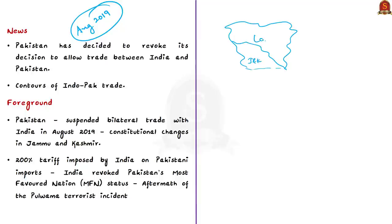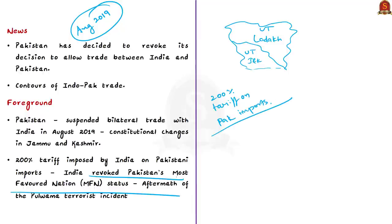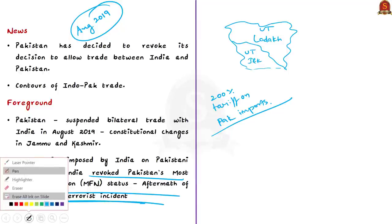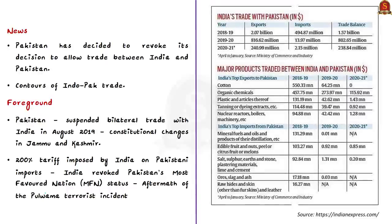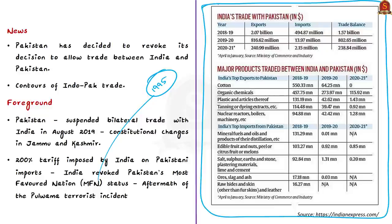Many experts believed the underlying reason for Pakistan's suspension of trade in August 2019 was the 200 percent tariff India imposed on Pakistani imports after revoking Pakistan's Most Favored Nation (MFN) status — done in response to alleged state-sponsored involvement in the Pulwama terrorist attack. It is notable that India had granted MFN status to Pakistan in 1995, but there was no reciprocal engagement from Pakistan.